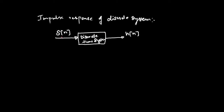If the input to this discrete time system is delta of n, then the output is h of n. We use the notation h of n. Strictly speaking, h of n is the response of the discrete system whose input is an impulse — this is called the impulse response. So if you give the input as an impulse, the output is the impulse response of the system, which is capital H applied to delta of n.